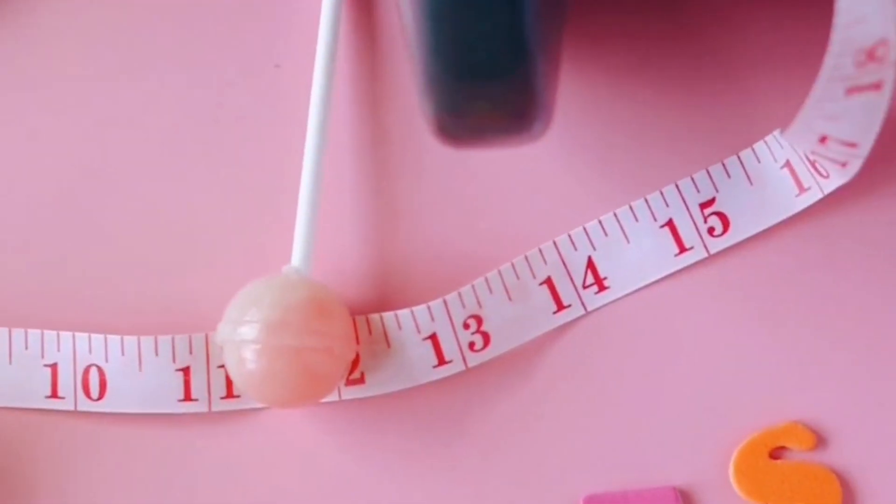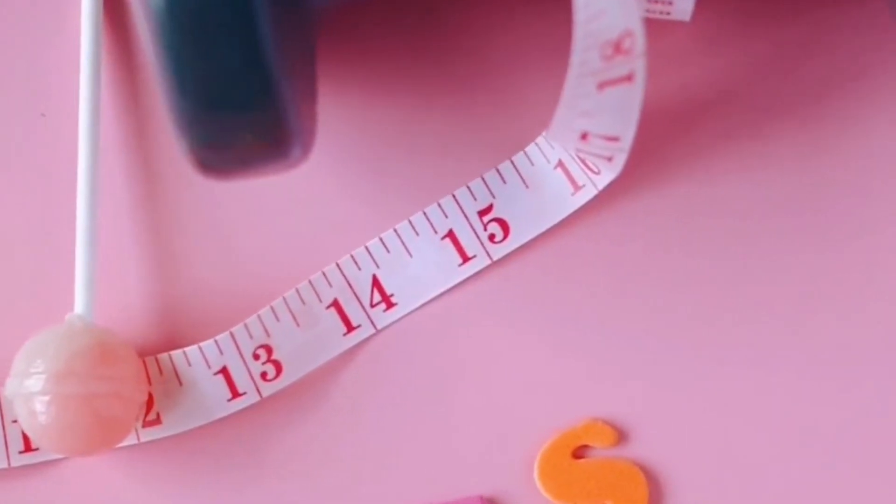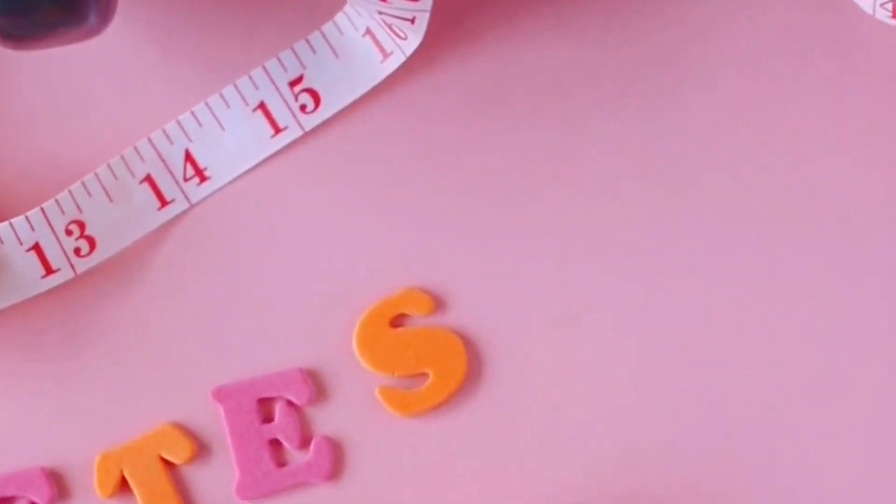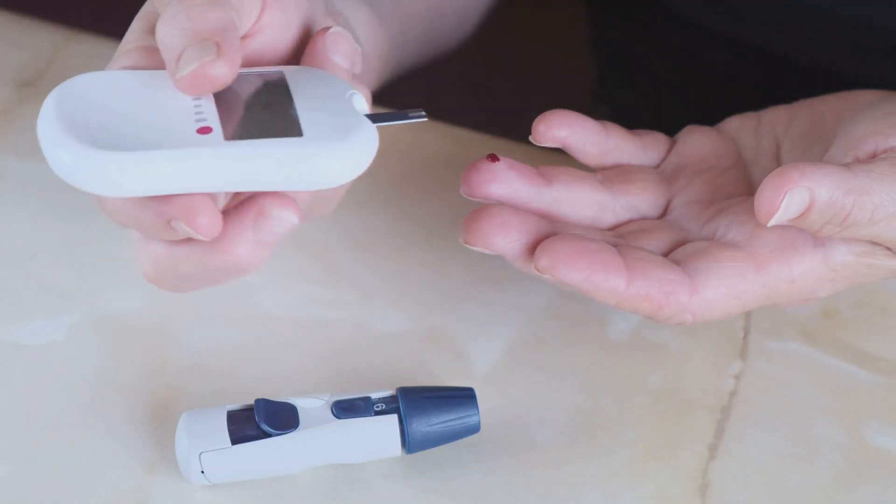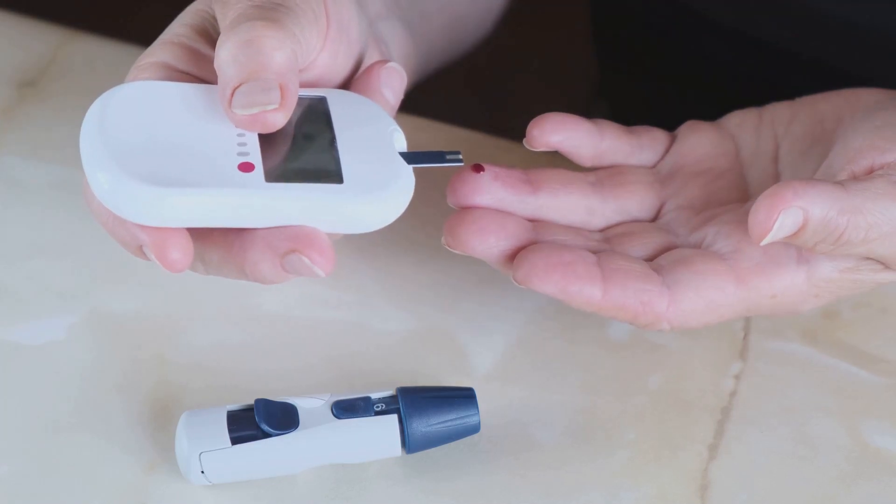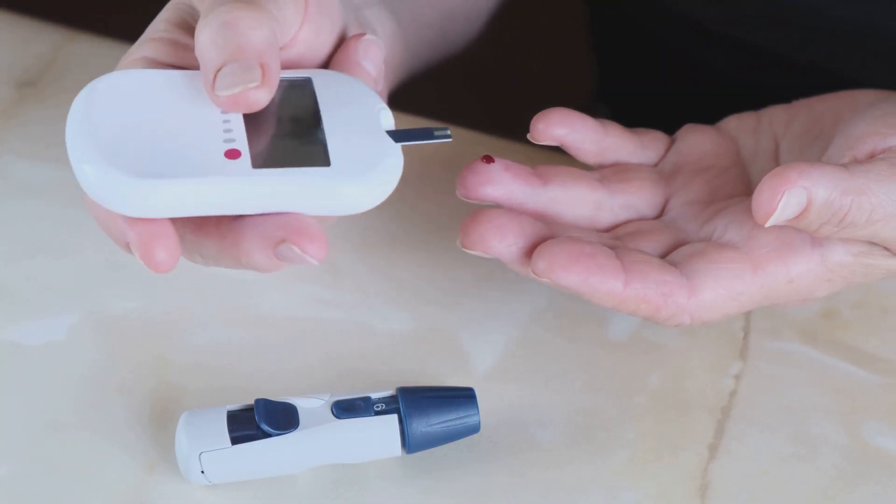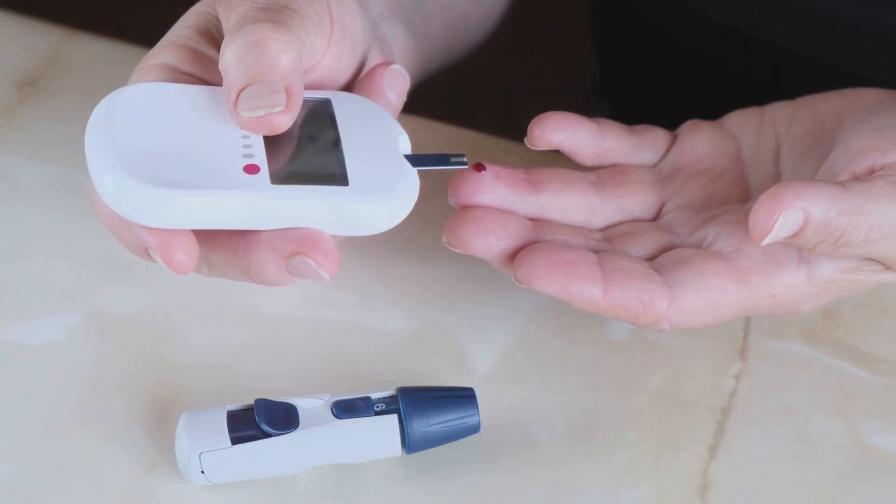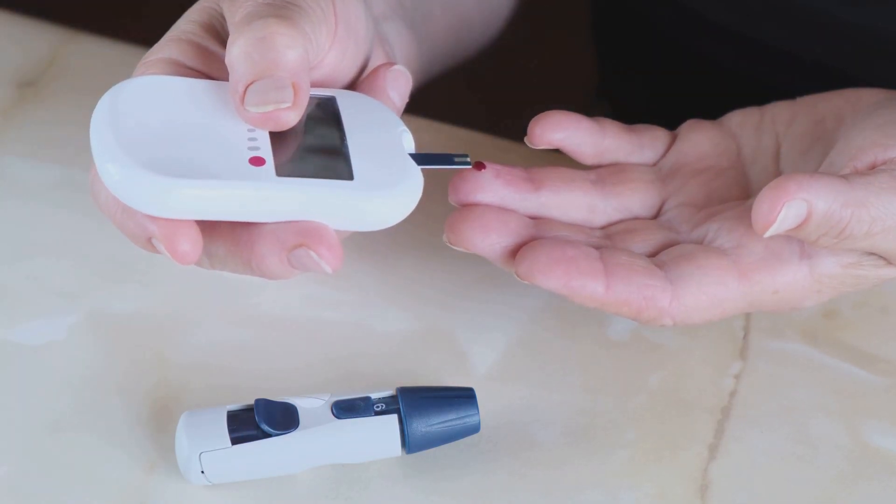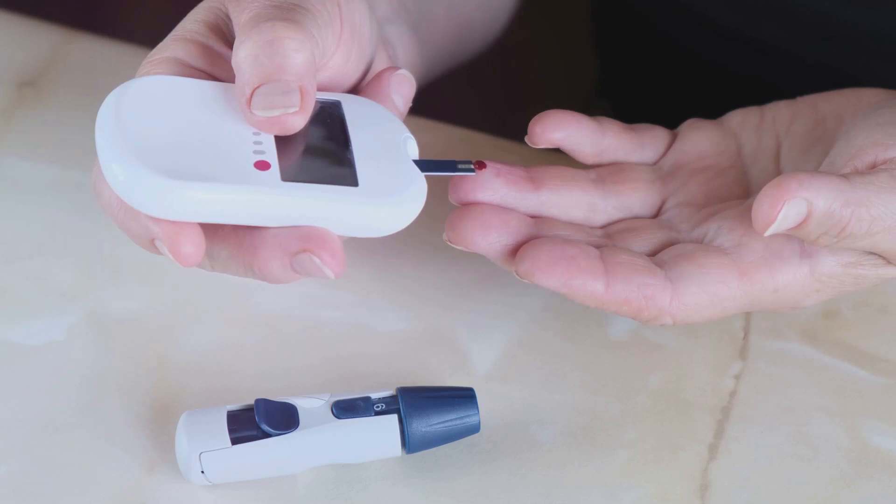Next, we have the HOMA-IR, which stands for Homeostatic Model Assessment of Insulin Resistance. This calculation uses your fasting glucose and insulin levels to estimate insulin resistance. It's a bit more complex than some of the other methods, but it provides a numerical value for insulin resistance, which can be very useful for tracking changes over time.